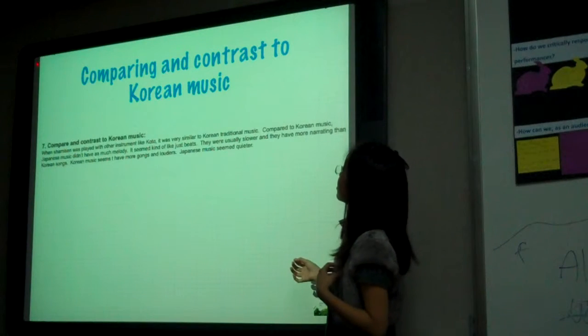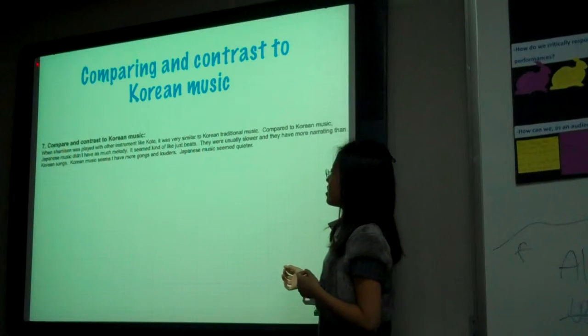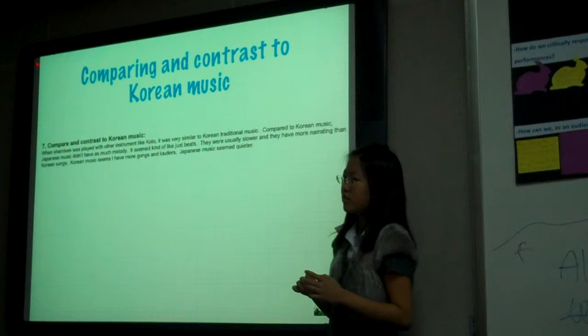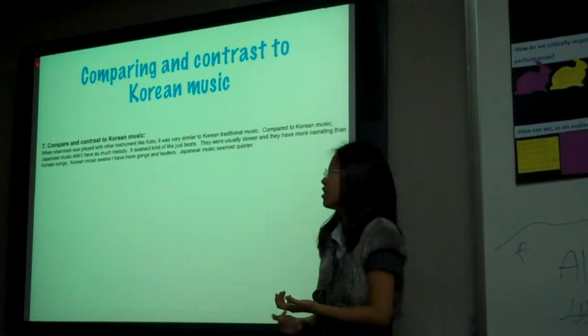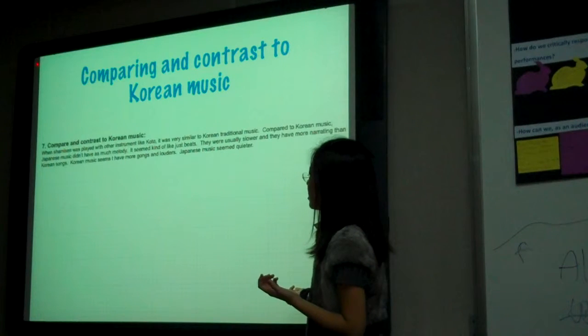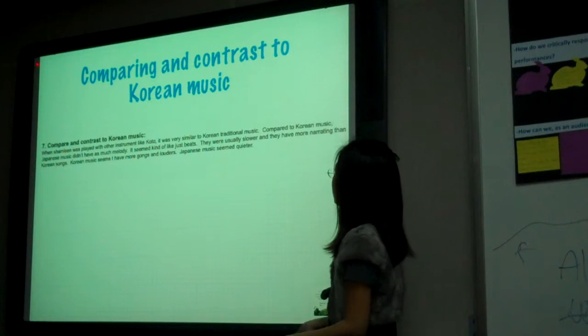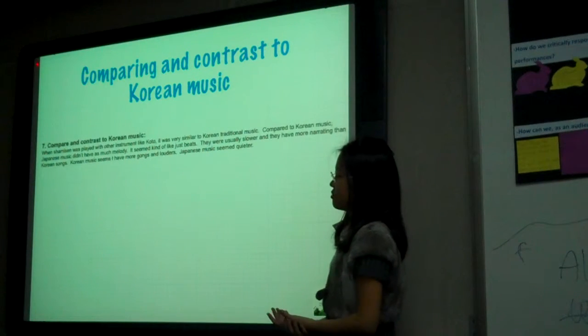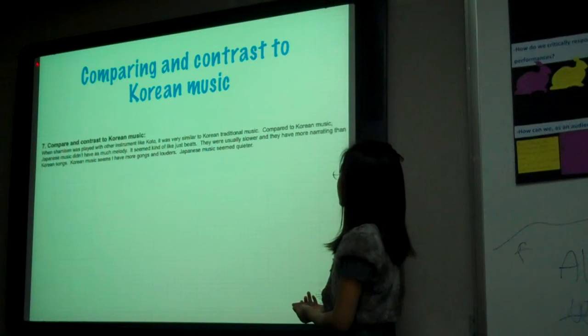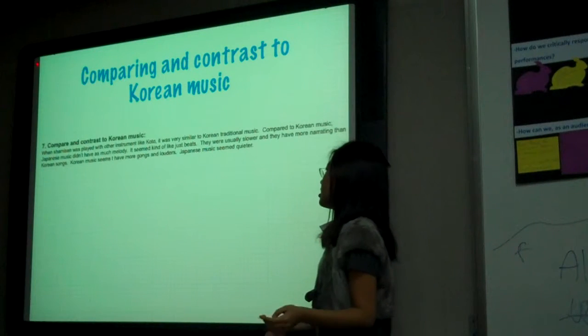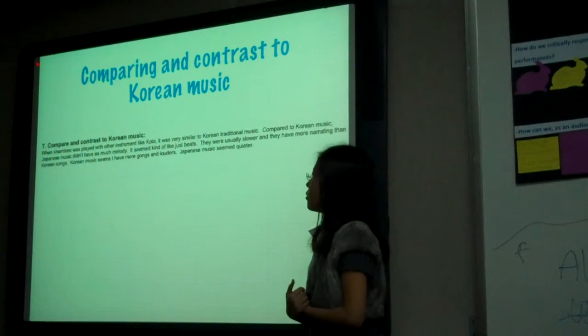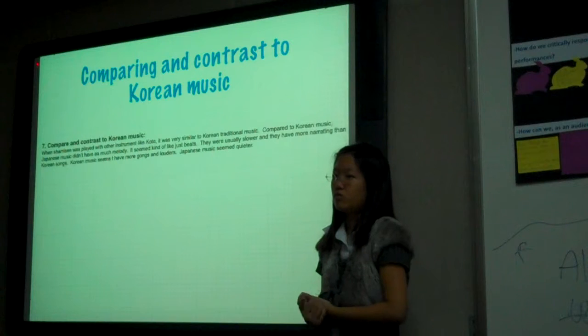Comparing and contrasting to Korean music - Korean music has similar instruments. The shamisen is played like the koto, but it's really similar to Korean music. Korean music is usually slower and has more narrating songs. Korean music seems to have more songs and more lyrics.